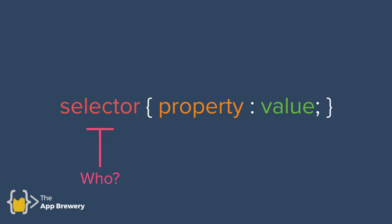The next part is the property — the 'what'. What about that H1 do you want to change? Is it the background color, text color, or position? Finally, we have the value — the 'how'. How do you want to change the background color of the H1? Do you want it to be blue or red? That's the value you provide to make the change.